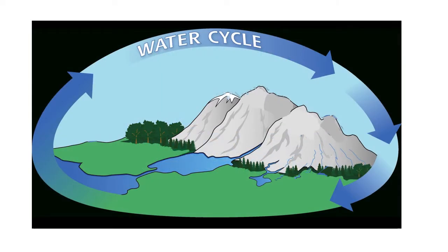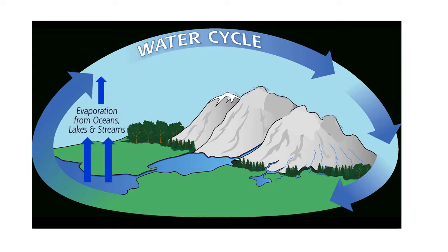Let's start with a brief refresher. The Sun's energy heats up the surface of the ocean and other water bodies and converts liquid water to water vapor through evaporation. Plants pull water up through their roots and release water vapor to the atmosphere through their leaves in a process called transpiration.